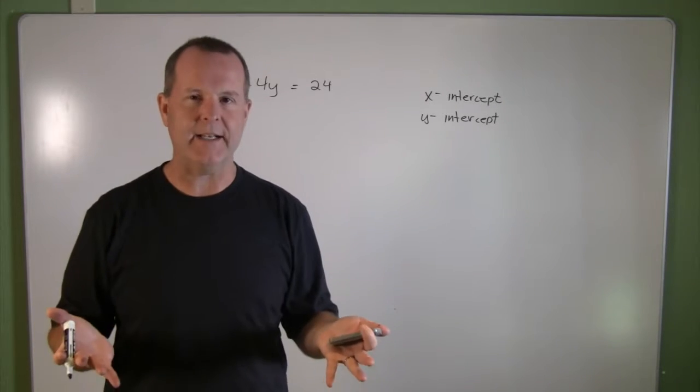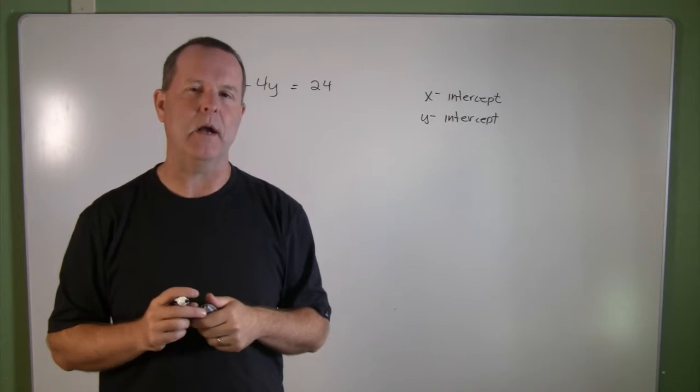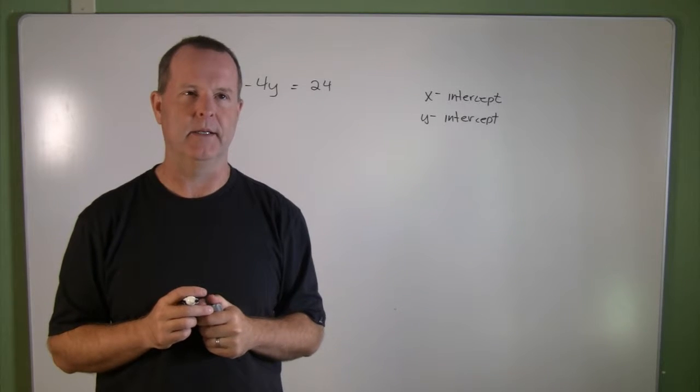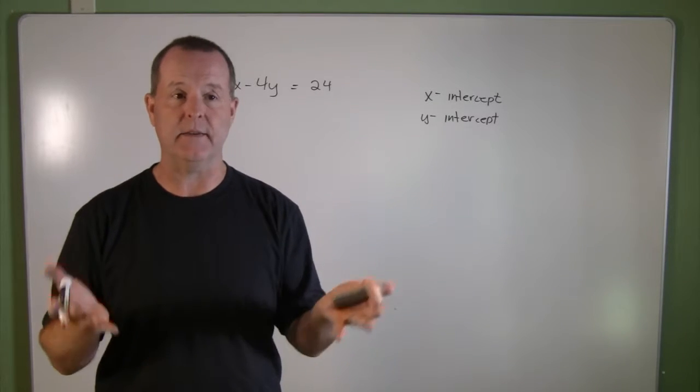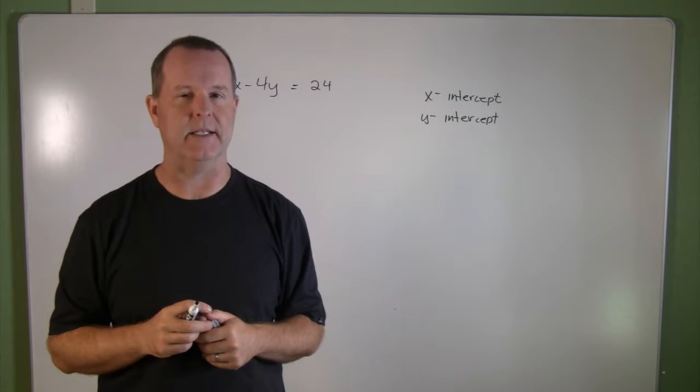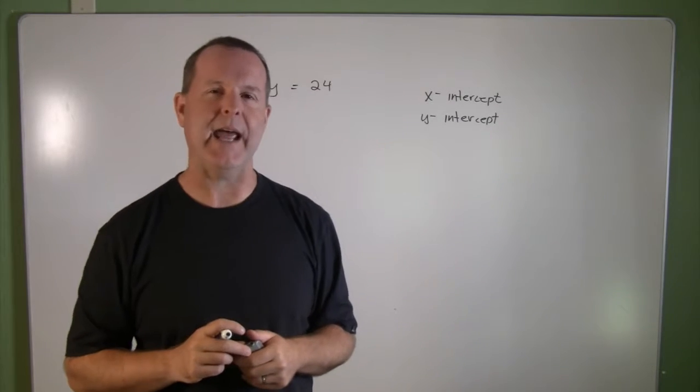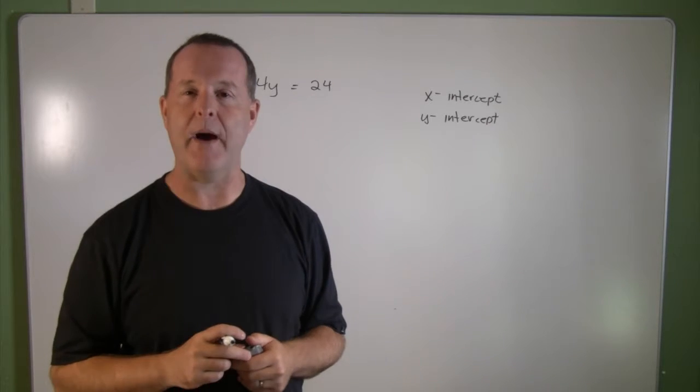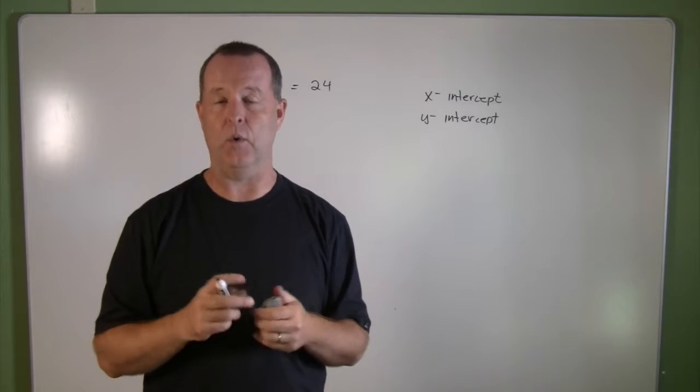In order to do that, I have to remember a little bit about the location of the x-intercept. I know that it crosses the x-axis. So when it crosses the x-axis, what do we know about its y-value or y-coordinate?